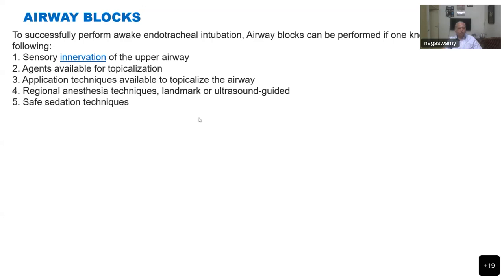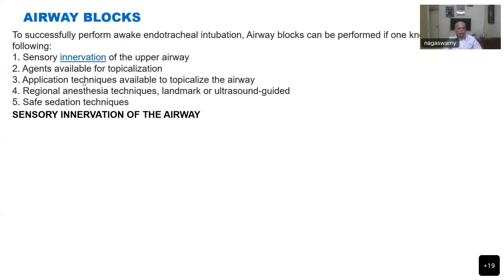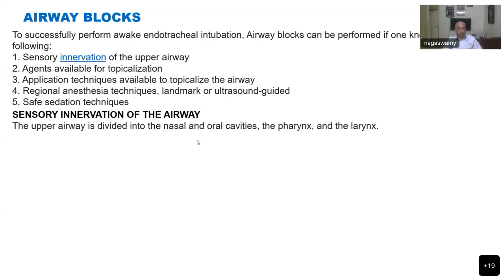These five are the primary prerequisites for airway block: sensory innervation anatomy you must know; you must know what drug you are going to use and in what technique; whether you are going to do a direct nerve block; whether it is going to be landmark-oriented or ultrasound-guided; and whether the patient requires any sedation to allay anxiety. These five things are the primary resources for doing an airway block.